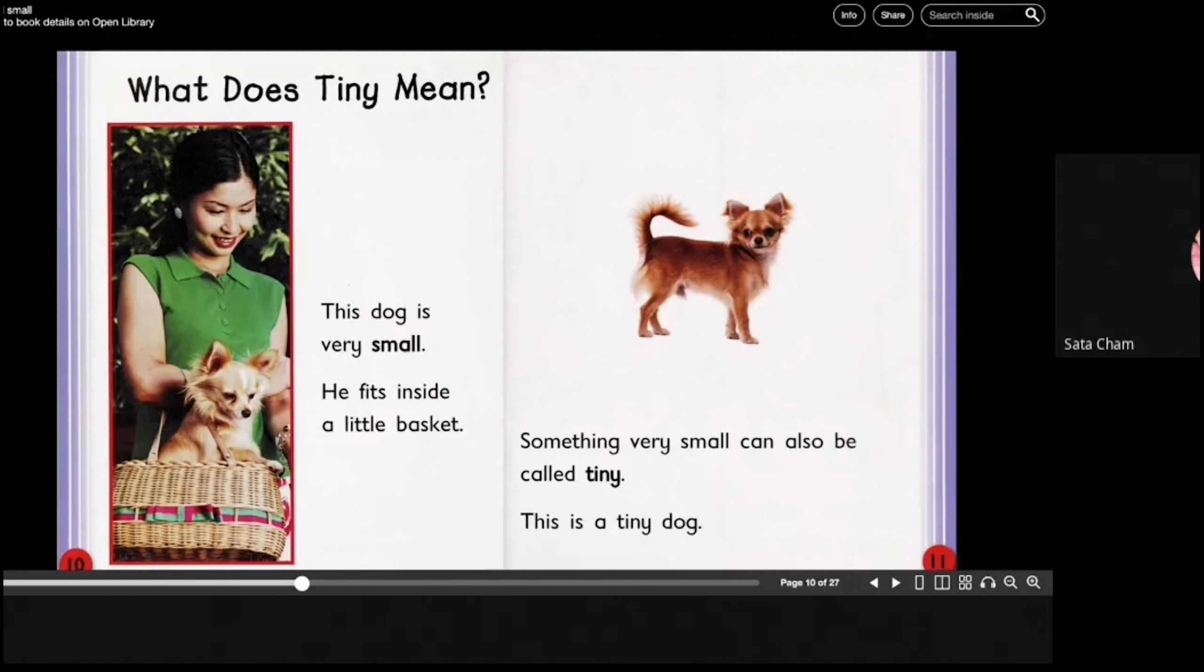What does tiny mean? This dog is very small. He fits inside a little basket. Something very small can also be called tiny. This is a tiny dog.